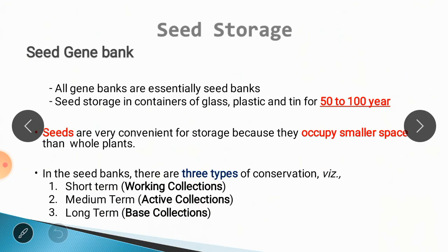The next topic is seed gene banks. All gene banks are essentially seed banks because the majority of germplasm is stored in the form of seeds. Seed storage in containers of glass, plastic, and tin for 50 to 100 years is performed here, because seeds are very convenient for storage and occupy a small space compared to the whole plant. There are three types of conservation during storage: short-term called working collection, medium-term called active collection, and long-term called base collection.